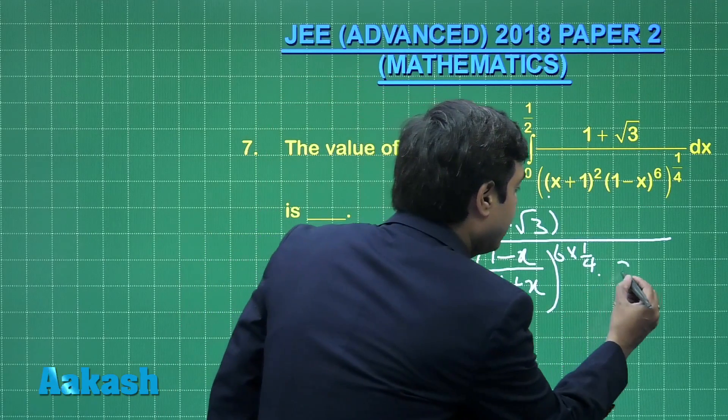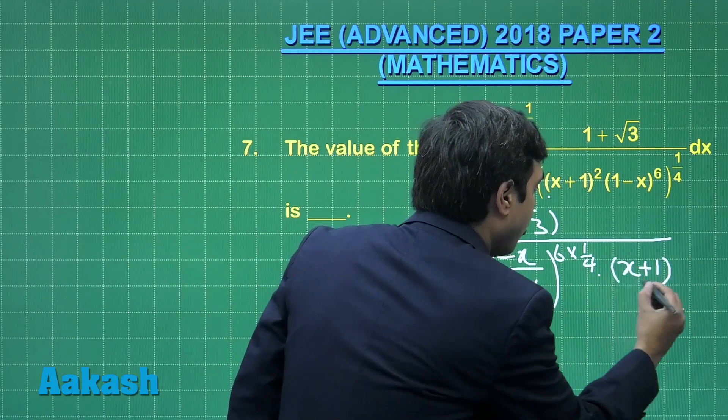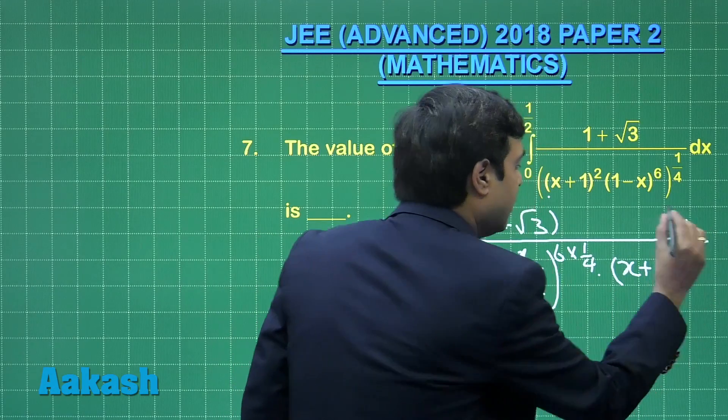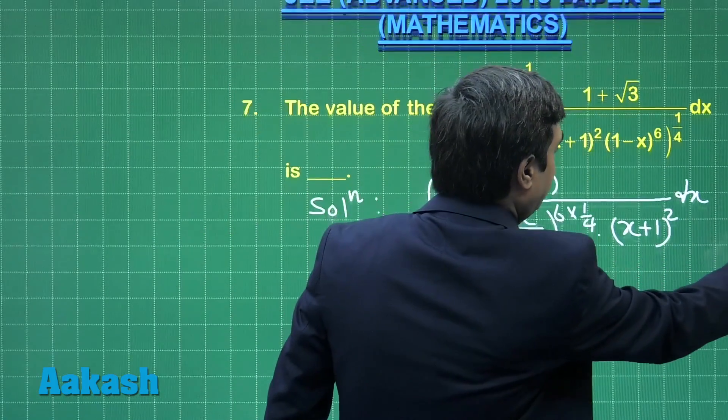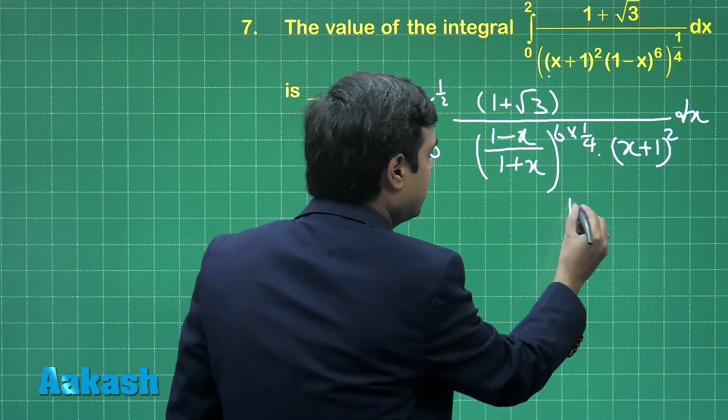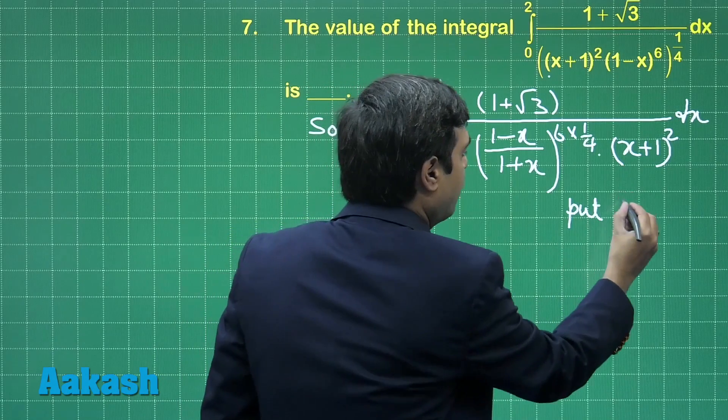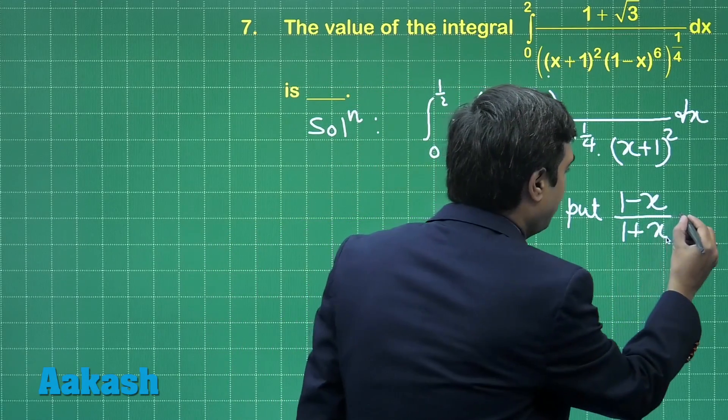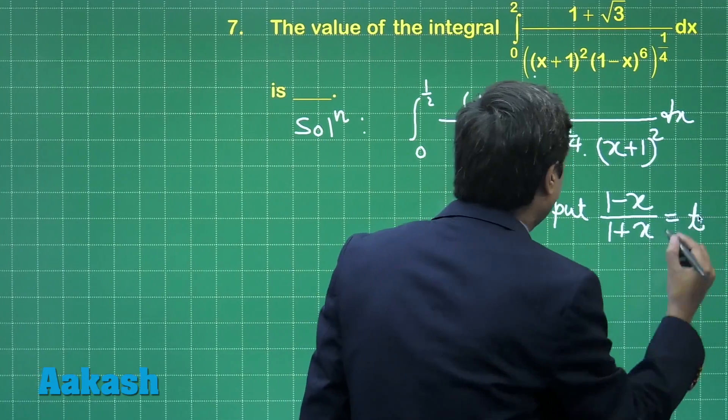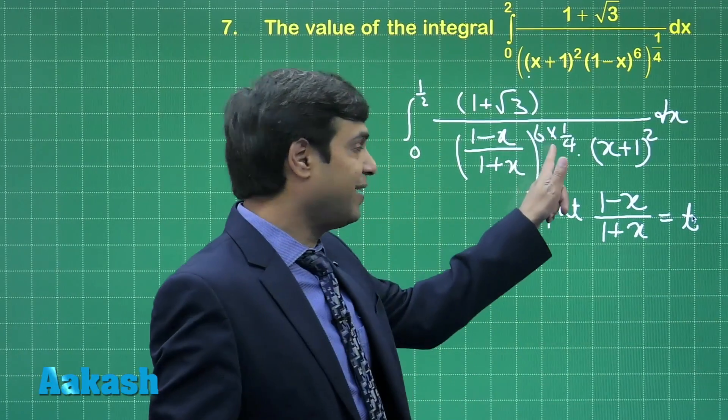We need to multiply here (x plus 1) whole square term. This is clear, simple substitution required after this one. That is, put (1 minus x) upon (1 plus x) equals to t, or since the power is 3 by 2.